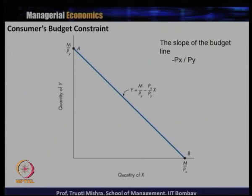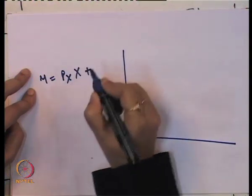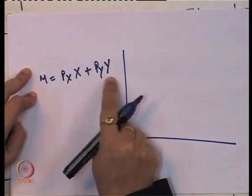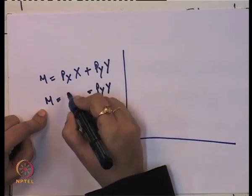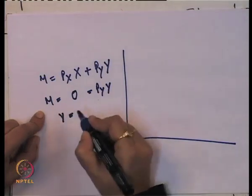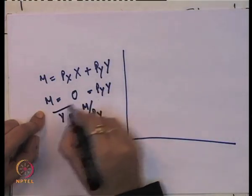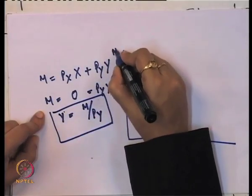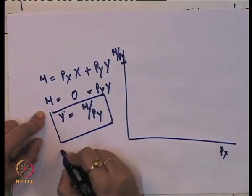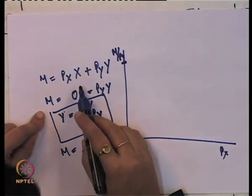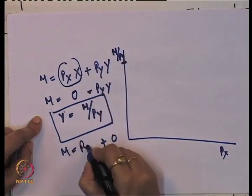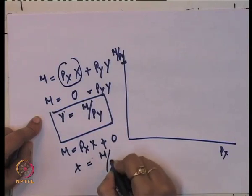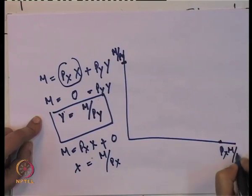To draw the budget line: the budget line equation is M = PxX + PyY. If the entire money income is spent only on Y, then the X term becomes zero, and solving for Y gives M/Py. Similarly, if the consumer spends the entire money income only on X, then the Y term becomes zero, and the value of X is M/Px.